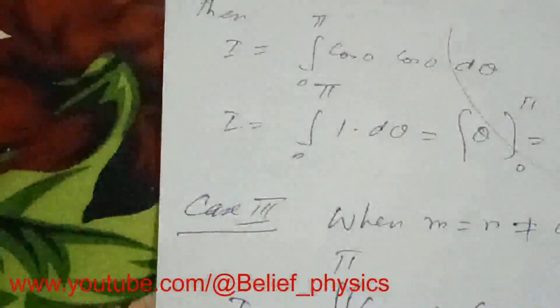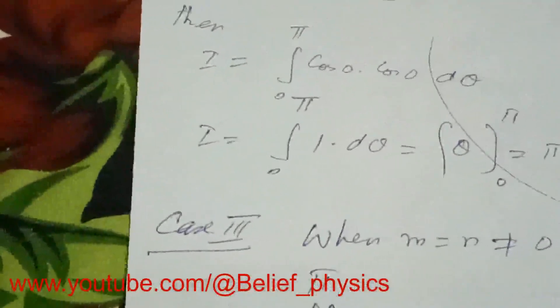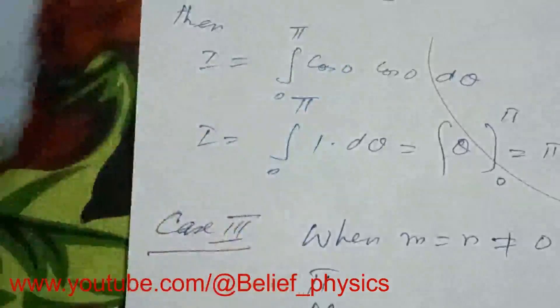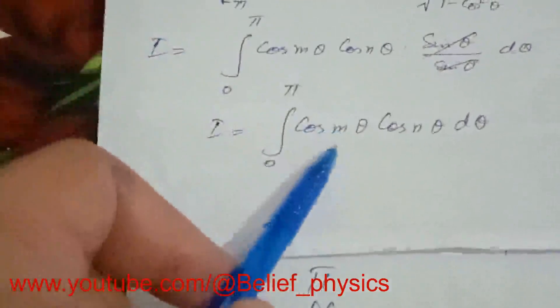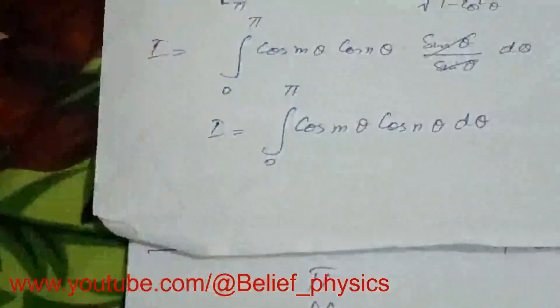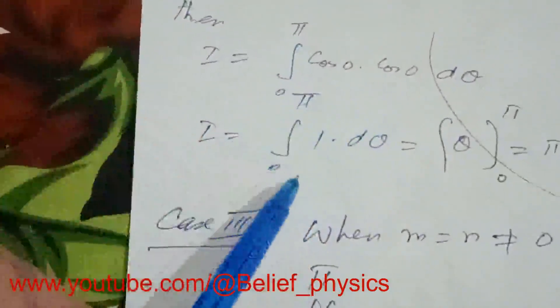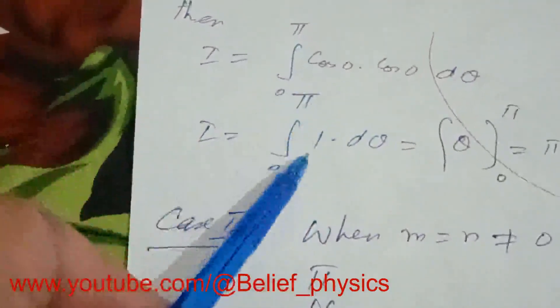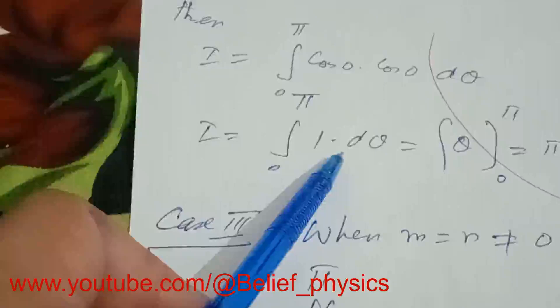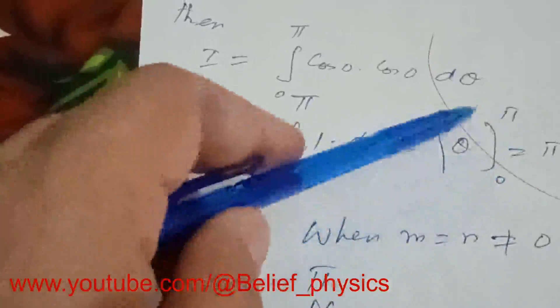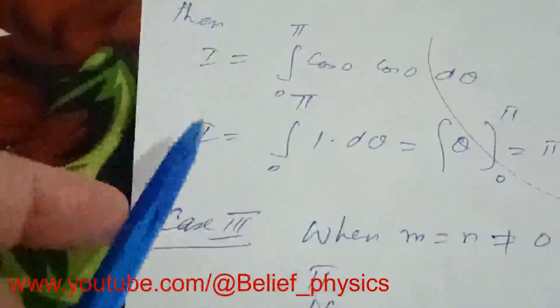Now the second case: m is equal to n is equal to zero. When both are zero, T_0(x) equals one, so the integral becomes the integral from zero to pi of 1 d theta, which equals theta evaluated from zero to pi, giving pi. This proves the second case.